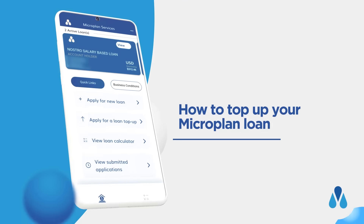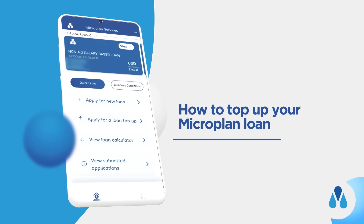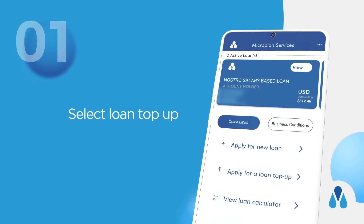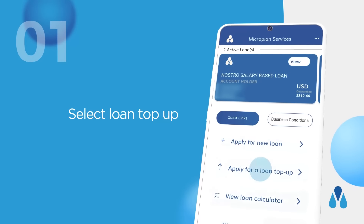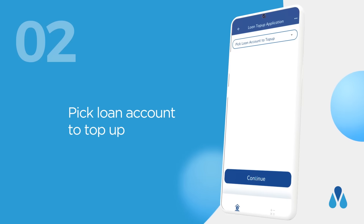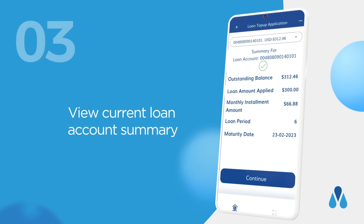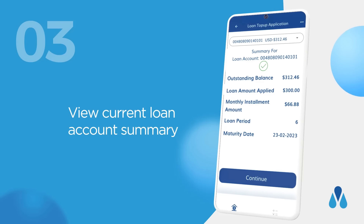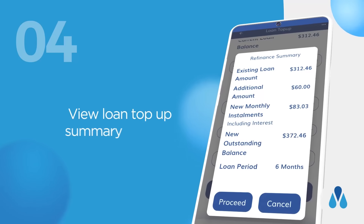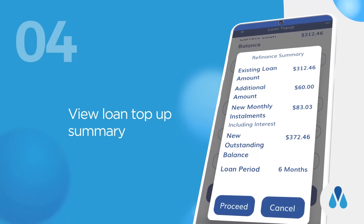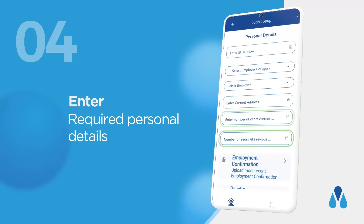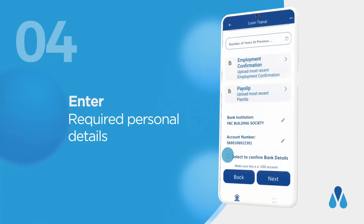How to top up your MicroPlan loan: On the home page, select Loan Top-Up. Pick the loan account to top up. View your current loan account summary. Enter loan application details and view the loan top-up summary. Enter the required personal details and upload the required documents.